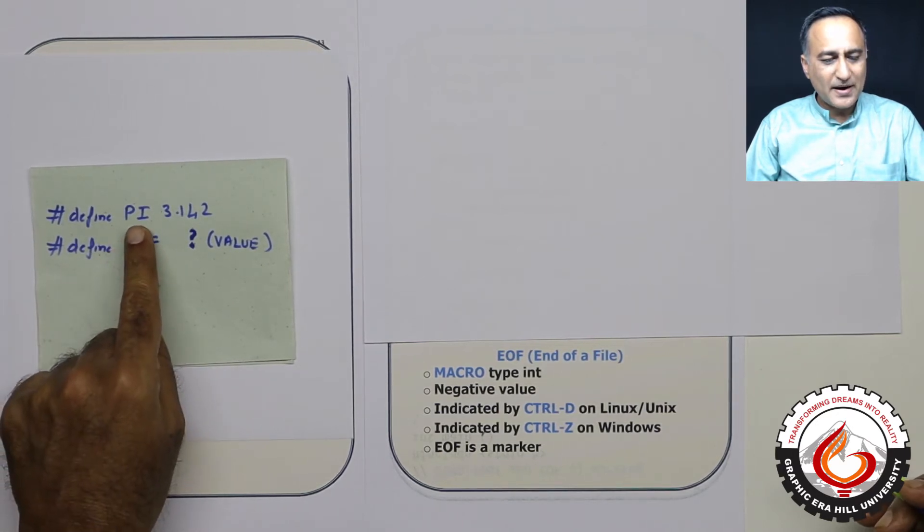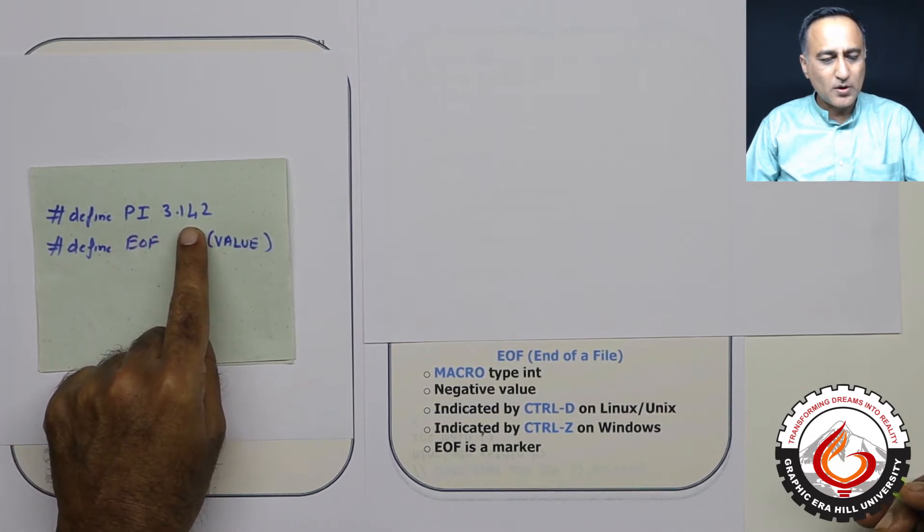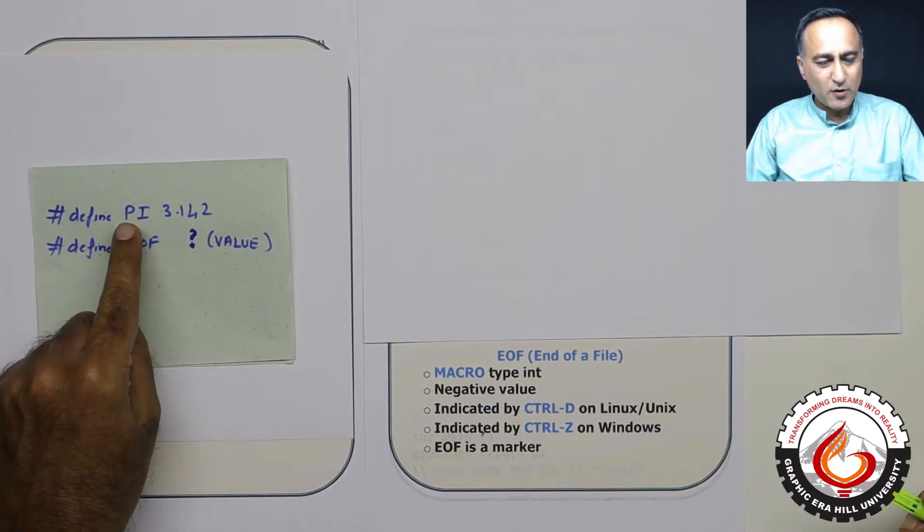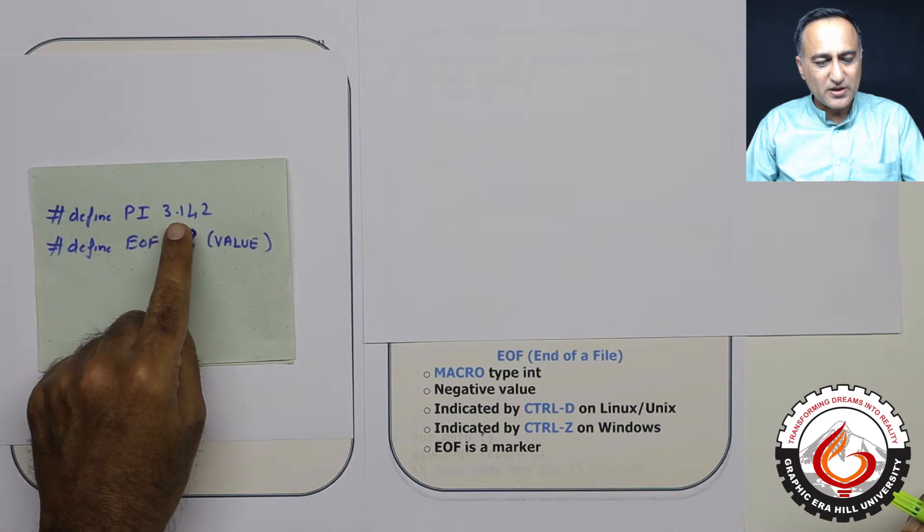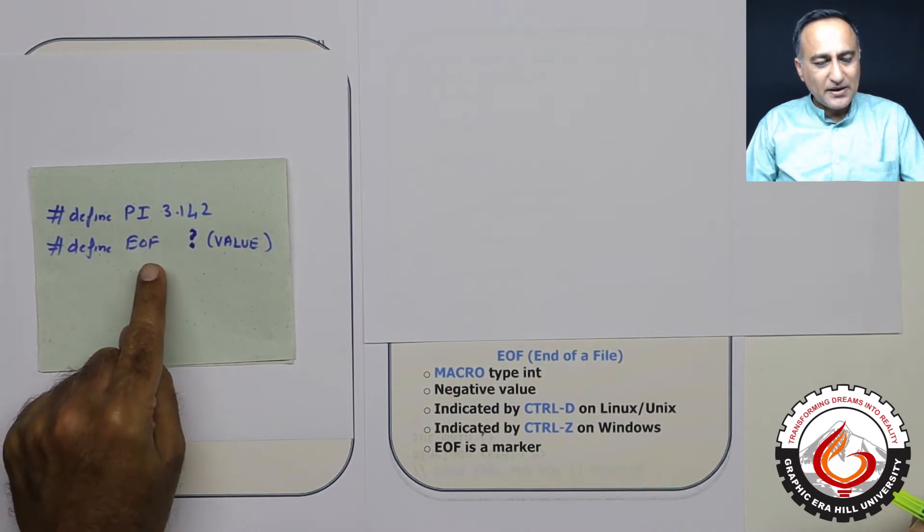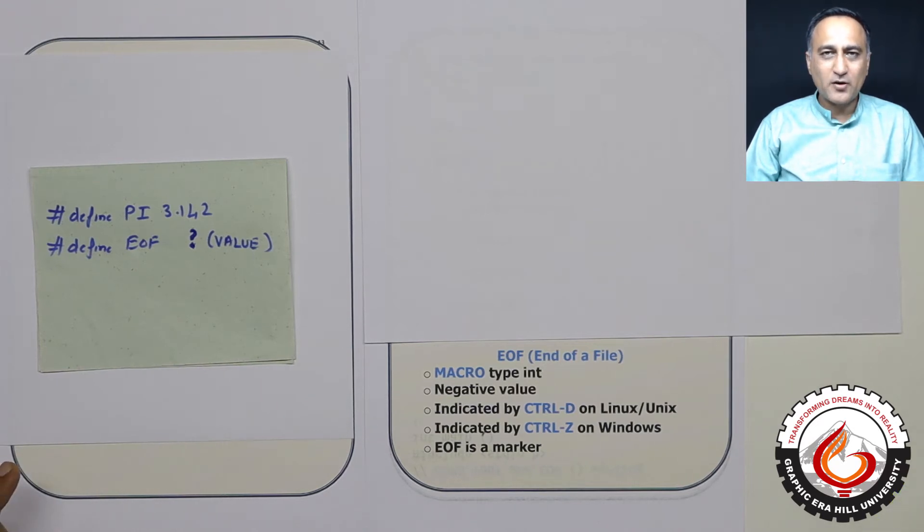Suppose I define pi as 3.142. Pi is an example of a macro. That means wherever pi occurs, it will be replaced with 3.142. Similarly, capital EOF is also a macro.